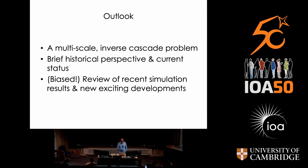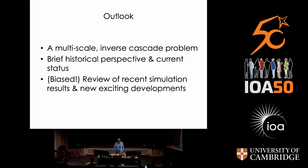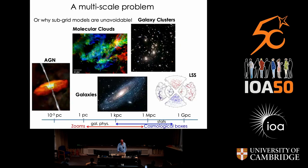It's going to be biased in the sense that I'm going to pick a few results that I think are interesting beyond the broad agreement that these cosmological simulations have reached. It's also going to be non-exhaustive because last time I checked, for IllustrisTNG alone, there are more than 850 papers, which would give me 1.5 seconds per paper if I had to summarize this. And then finally, I'll conclude by giving you new exciting developments that are coming in the field.